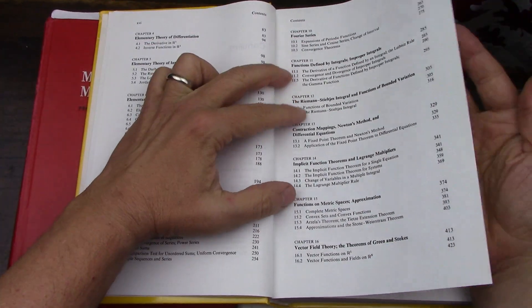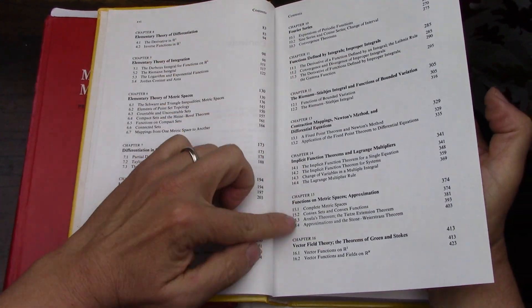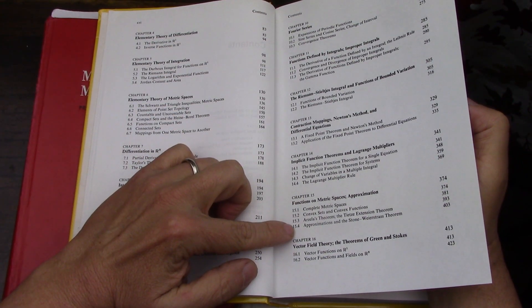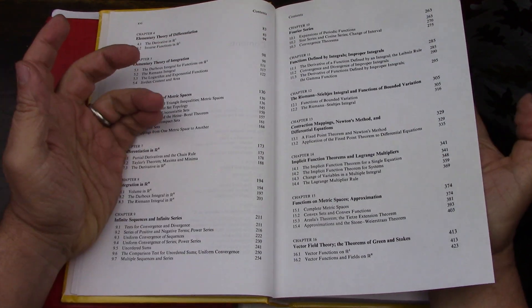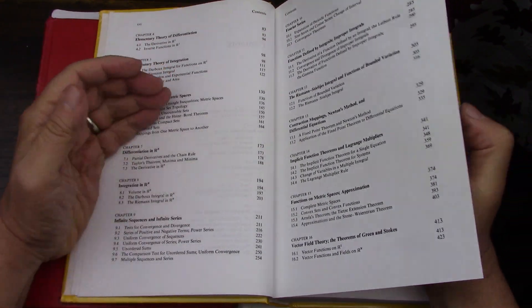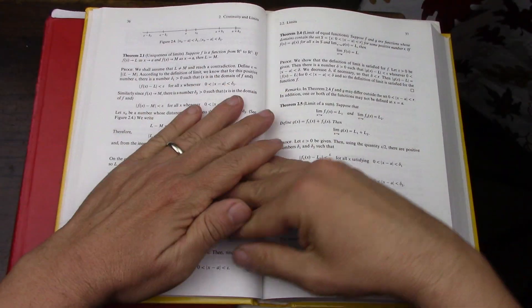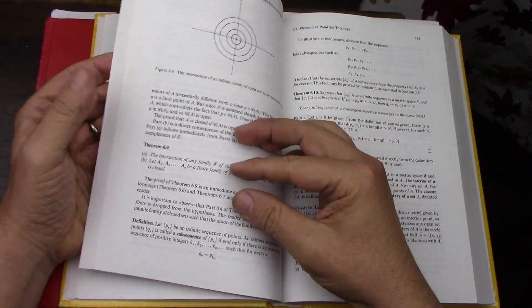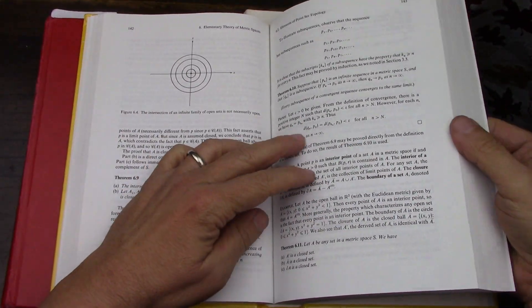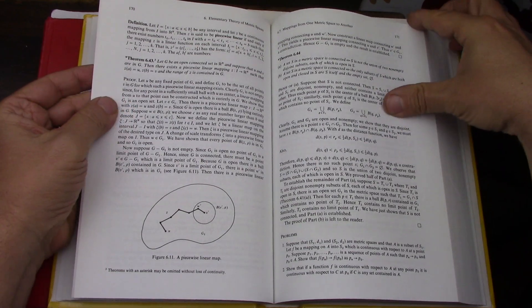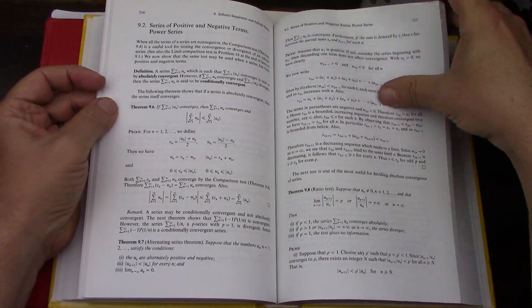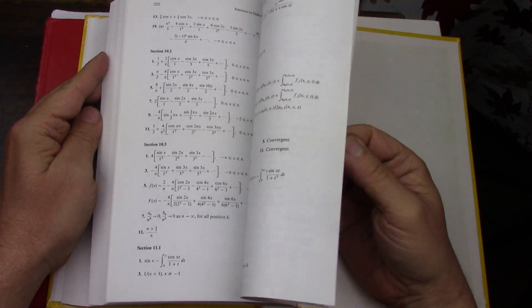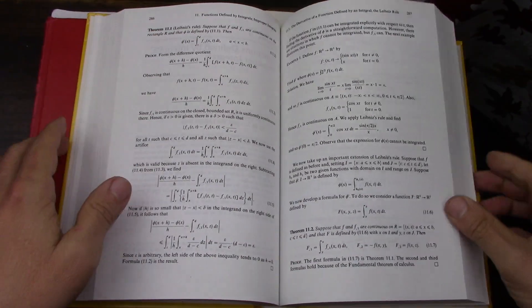But it also has a lot of additional content, some of which is found in Wade. Even Jordan regions are in this book. And the thing that I love about the book, which I think will make it very useful in the future, is not only does it explain things really well, it's got a ton of problems and answers in the back. So that's very useful.